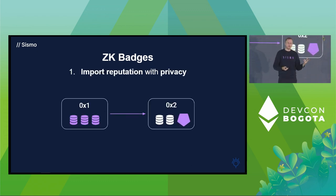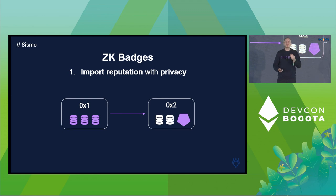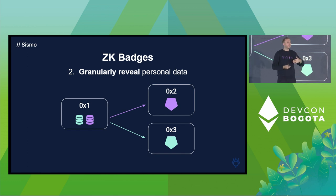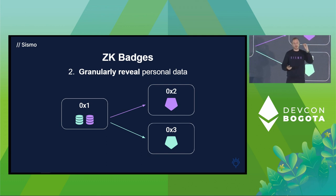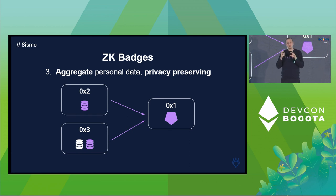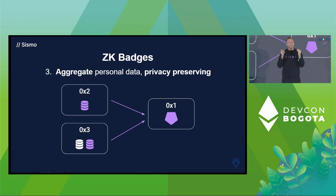ZKBadges allow you to do three things. First, they allow you to import reputation from one account to another. If I have a CryptoPunk on one address and want to prove that on another address, I get a ZKBadge on the new address and have the proof that I have a punk. Second, they allow you to selectively and granularly reveal personal data — for instance, I can pick just CryptoPunk ownership and reveal that I own it without giving my address or anything else. Third, they allow you to aggregate your data — prove you have two punks across two separate addresses without creating a link between your accounts. ZKBadges let you control your identities without creating links between them.